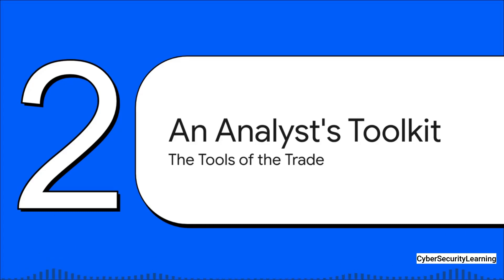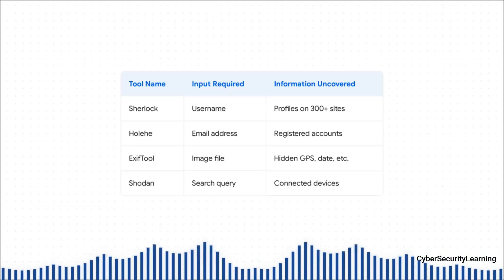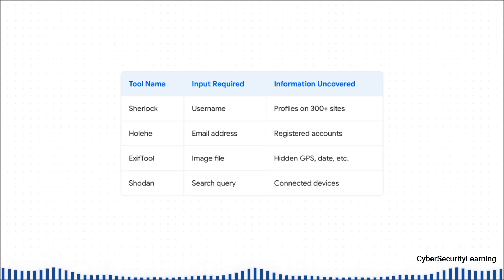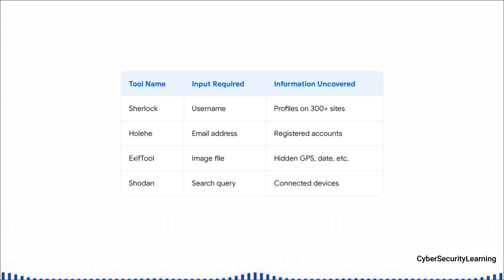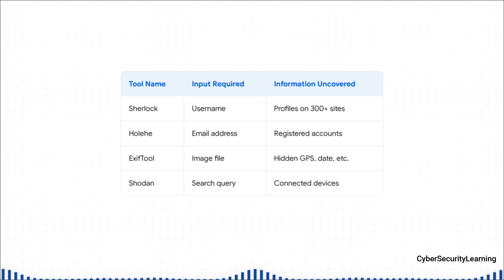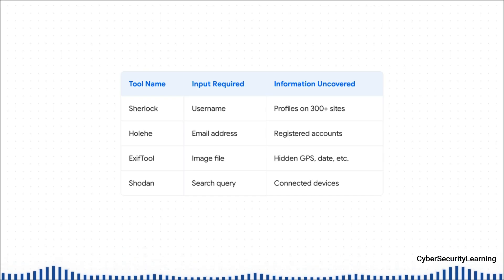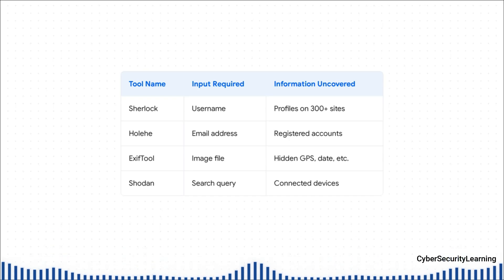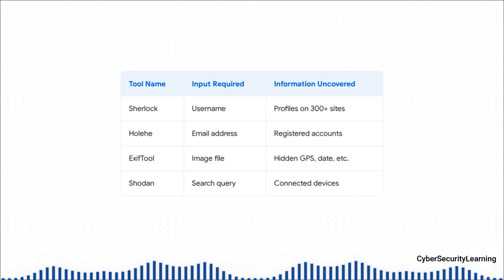So how does someone actually find all this stuff? Let's open up the Digital Detective's Toolkit. A tool like Sherlock lets you give it one username and it blasts it across more than 300 social networks and websites to see where it pops up. Then there's Holhe, which is really clever — you give it an email and it tries to create accounts on various websites. If it gets an error like "that email's already in use," boom, you know an account exists.